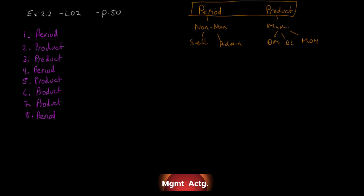Number nine: advertising costs — not a manufacturing cost, so right away it must be a period cost. Number ten: workers' compensation insurance for factory employees — that's a cost of making something, a manufacturing cost, so it must be a product cost.